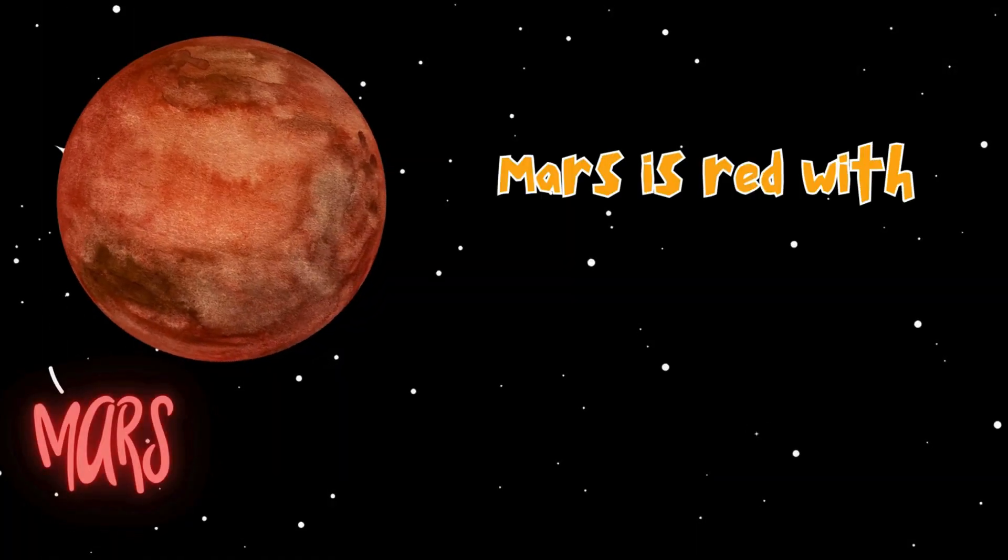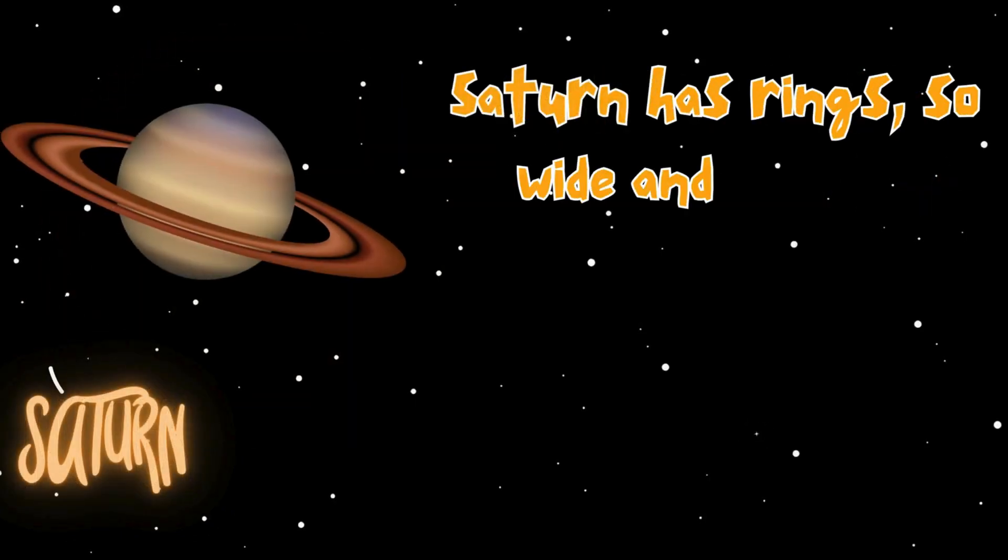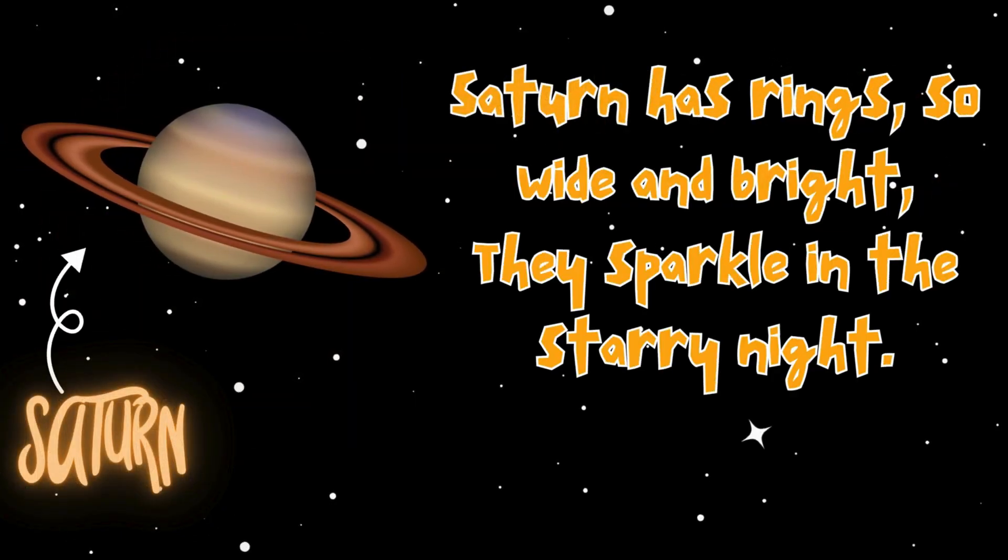Mars is red, with dusty sand, Jupiter's big, the largest in the land. Saturn has rings so wide and bright, they sparkle in the starry night.